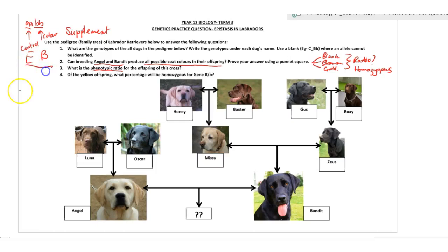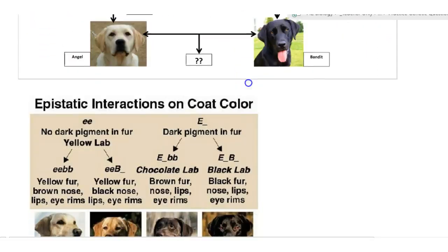So that's how we're going to label them from now on in the video. You've been asked to determine whether Angel and Bandit can produce black, brown, and gold Labradors in their mating. You're also asked to find the ratio of colors from the offspring and what percentage of them will be homozygous.